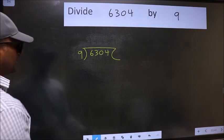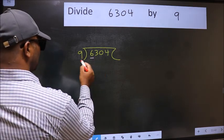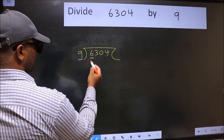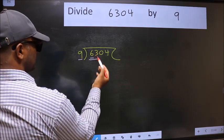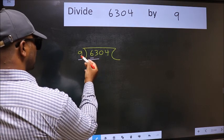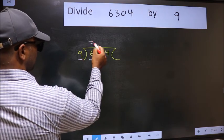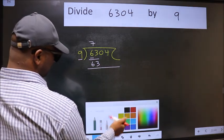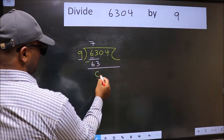Next. Here we have 6 and here 9. 6 is smaller than 9. So, we should take two numbers, 63. When do we get 63 in 9 table? 9 sevens 63. Now, we should subtract. We get 0.